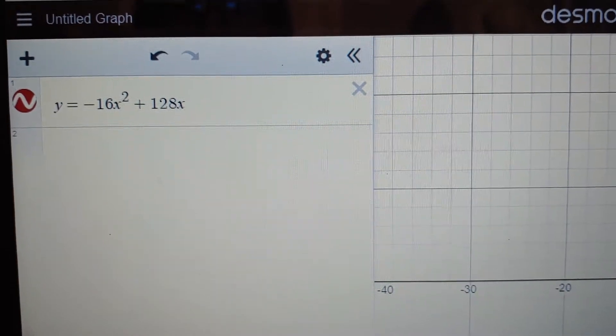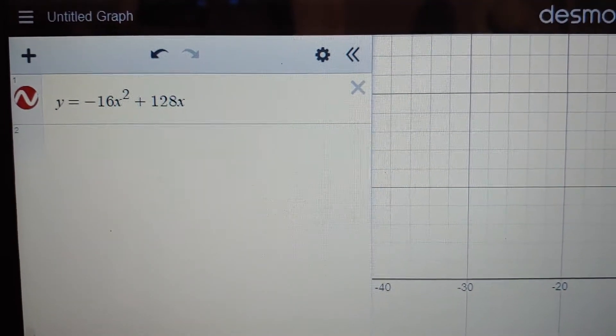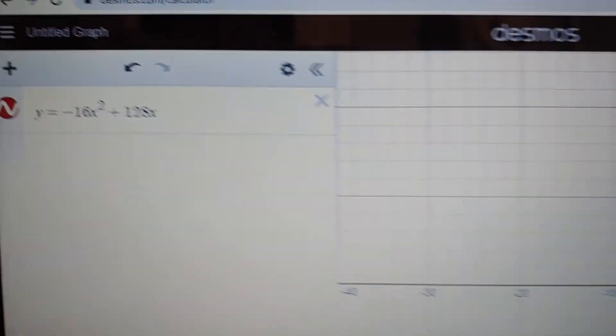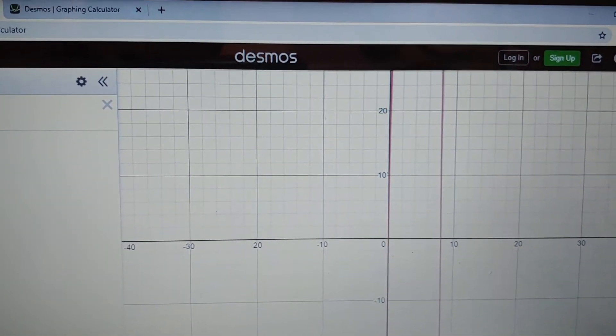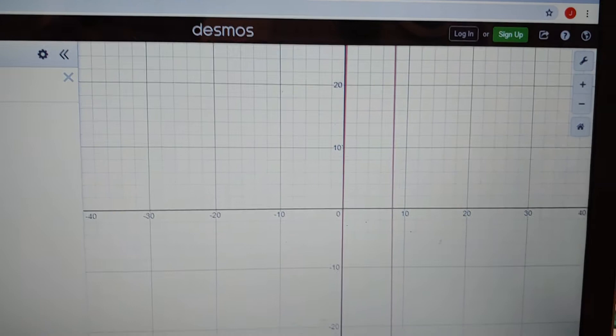so this is the function I wanted to graph, was y equals negative 16x squared plus 128x. And when I graph it, it goes off the screen. So obviously you can zoom in or out,